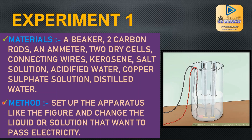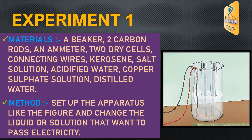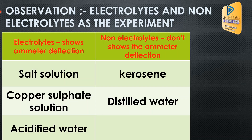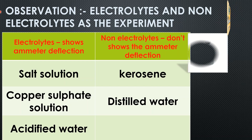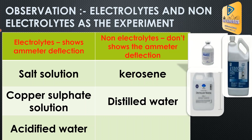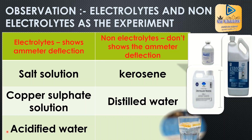First, set up the apparatus as shown in the figure and change the liquid solutions to test which ones pass electricity. You can observe ammeter deflections with solutions like salt, copper sulphate, and acidified water. You cannot observe deflections in solutions like kerosene and distilled water.